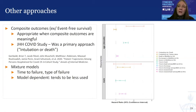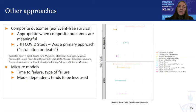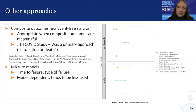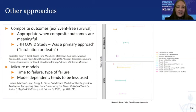One other alternative approach is mixture modeling. In these models, one separately models the time to the first failure, whatever cause that may be due to, and then something like a logistic regression for the type of failure. These models are very dependent on the specification of the model and so they tend not to be used as much as the others we've discussed. There's a reference provided in case you're interested.